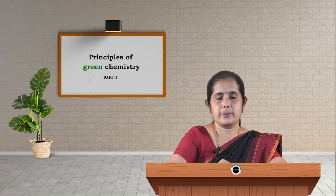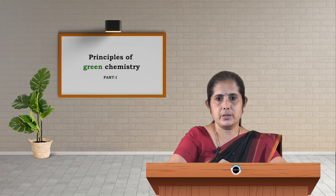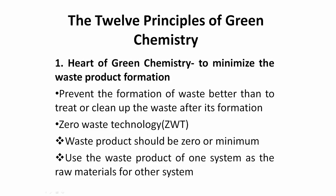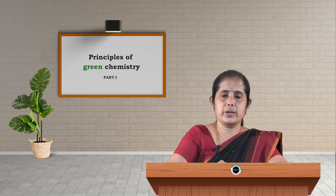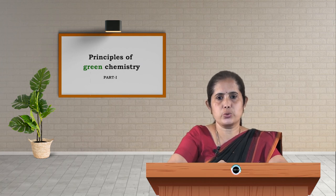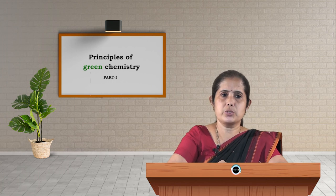So what are these 12 principles? The first one is the heart of green chemistry: it is to minimize waste product formation. When we discuss the purposes of green chemistry, we said we should minimize waste product formation. If wastes are formed, they are dangerous to the environment and to our life. So we have to develop a zero waste technology.